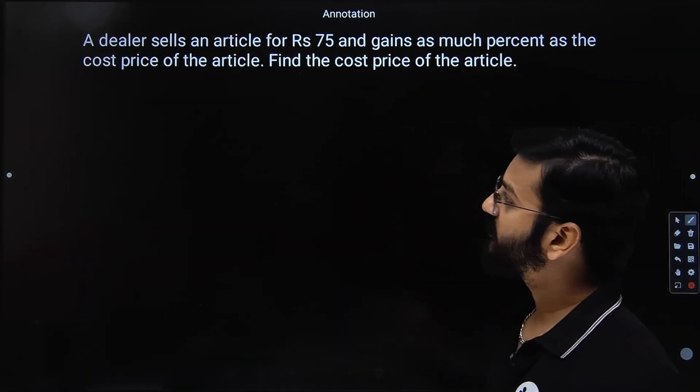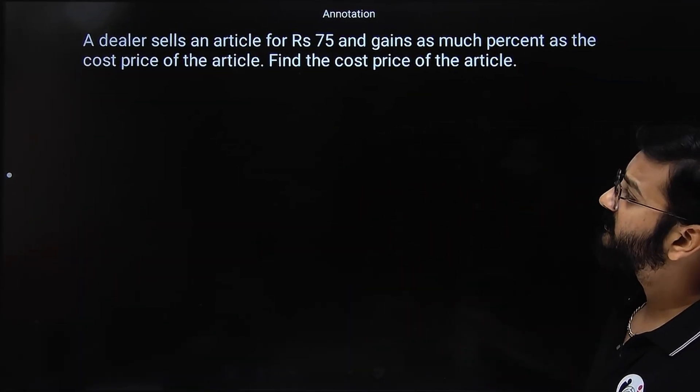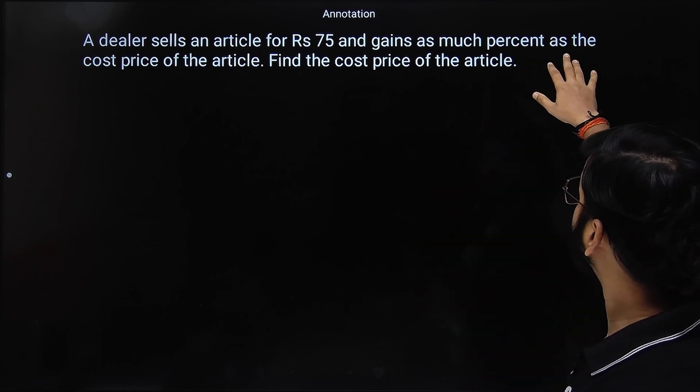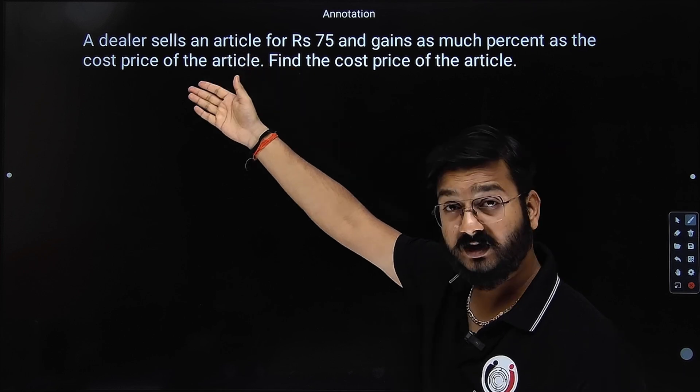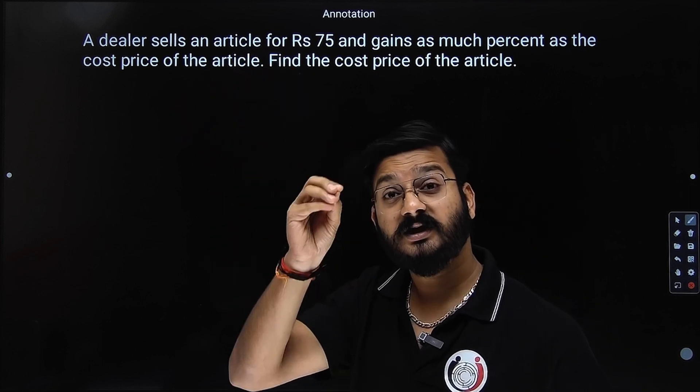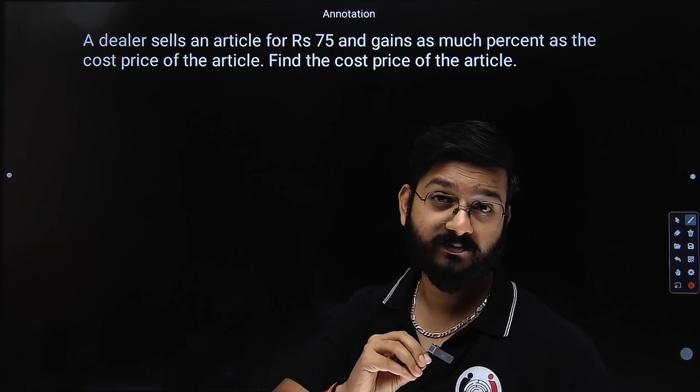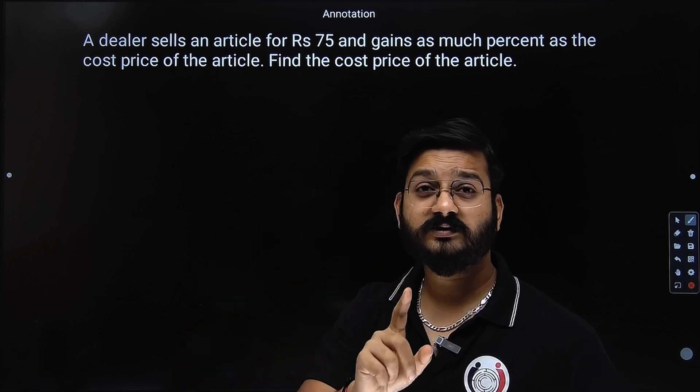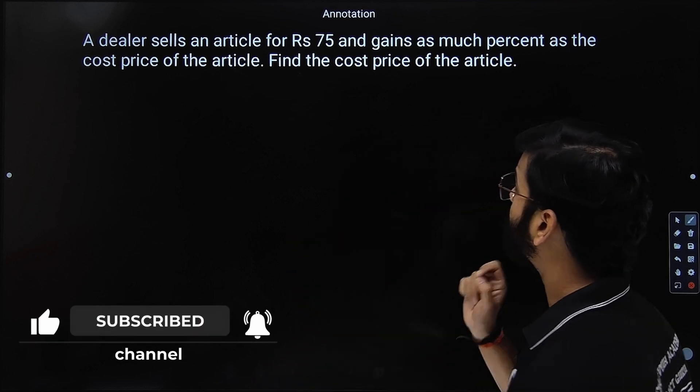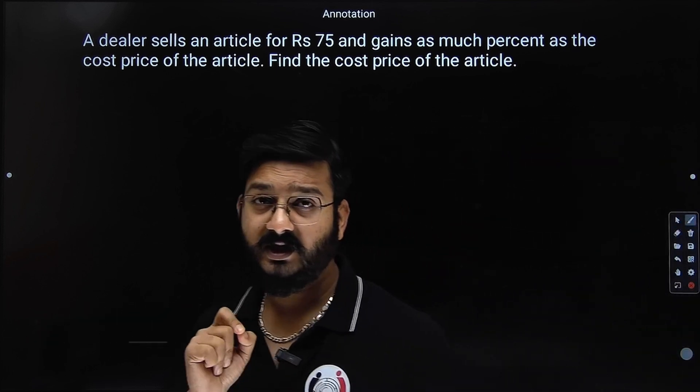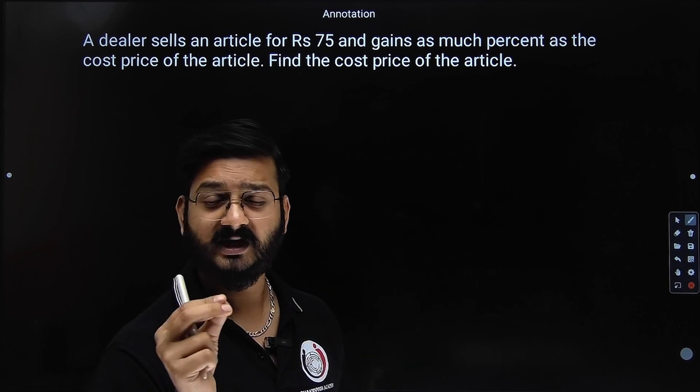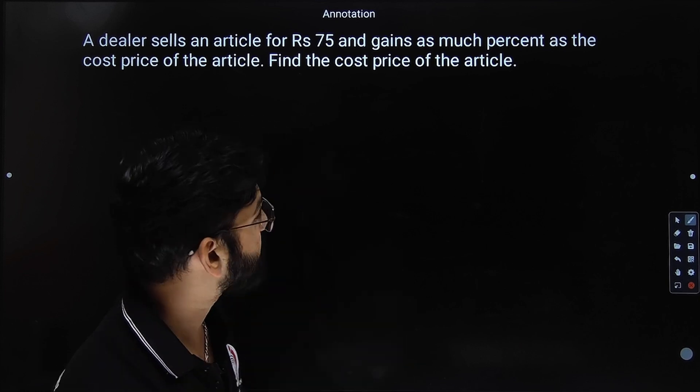Okay students, as you can see the first question on the screen. The first question says a dealer sells an article for Rs.75 and gains as much percent as the cost price of the article. So whatever is the cost price of the article, that much is the profit percentage also. So if we assume the cost price of the article to be Rs.x, the profit percentage is x. You need to find what is the cost price of the article. Here we will use the fundamentals of CP, SP, cost price, selling price as well as percentage. Let us start discussing this.